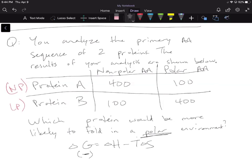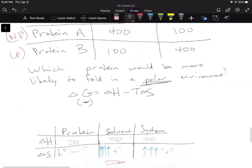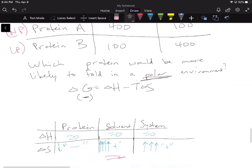So again, we have two things we can manipulate, the delta H and the delta S. And I copied down the chart from the previous video talking about how we got the enthalpy and entropy. Because we are roughly forming the same strength of bonds before and after folding in a polar environment, we're going to say that effectively the delta H is going to be near zero.